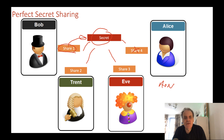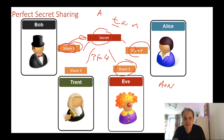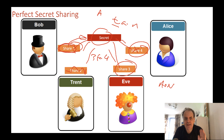In a more resilient form, we can define a threshold T and a number of shares N, then define an any-T-from-N scheme. For example, any three from four, so that Bob, Eve, and Alice can come together and recover the share — Trent may have lost his share, or we may define a policy where any three of them can come together and share the secret. It's perfect in that if we have fewer than T shares, we cannot recover the secret.